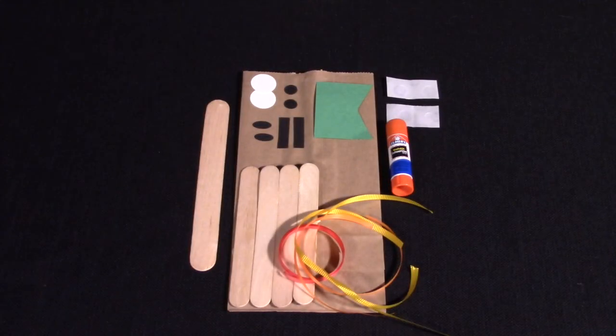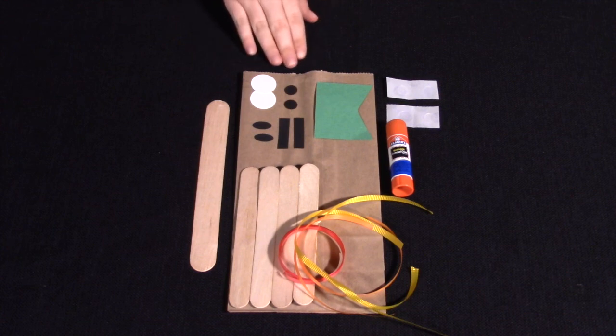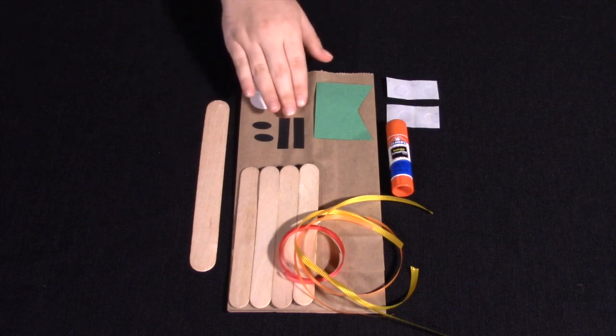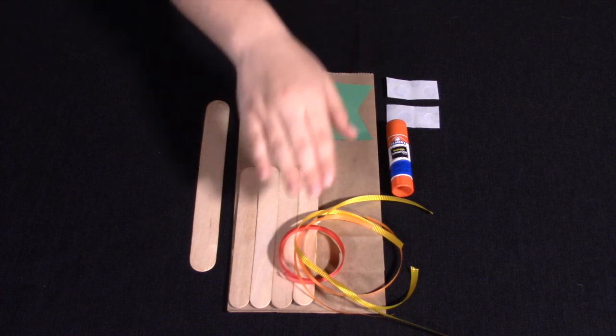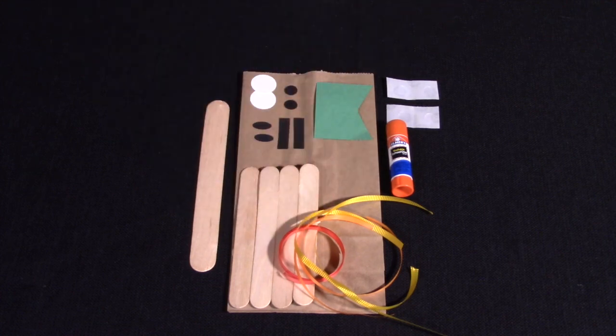Inside the bag, you'll find two white circles and two black circles, two black rectangles, two ovals, one green piece of paper, two orange, yellow, and red curling ribbons,